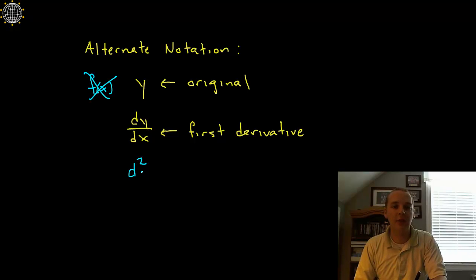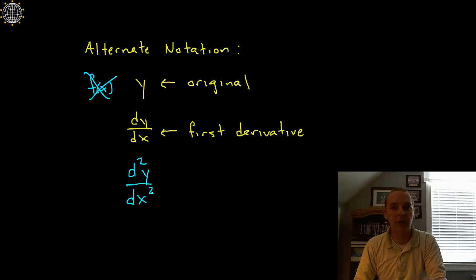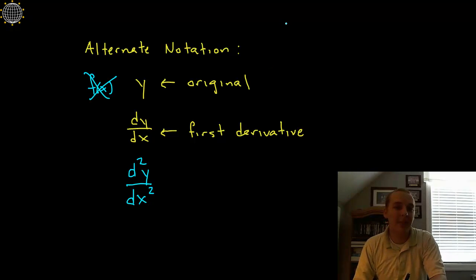The second derivative of y with respect to x. Pay close attention to where the twos are going: this two is between the d and the y, and this two is after the x. Here's one way you could think about it: if you recall having the derivative as an operator, where reading it this way means you're about to differentiate the thing to the right.